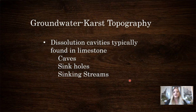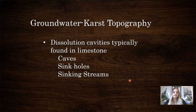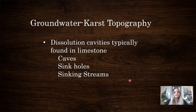Other things that happen in groundwater include karst topography. This includes the dissolution of material — usually limestone — due to water interacting with the material. It forms things like caves, sinkholes, and sinking streams. We see a lot of this in Florida because they have a lot of limestone. When surface water percolates down into the groundwater, it aids in that decay or erosion of the limestone, creating those caves, sinkholes, and sinking streams.